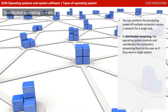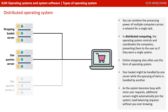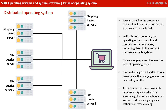Now let's look at distributed operating systems. You're able to combine the processing power of multiple computers across a network for a single task. In distributed computing, the operating system controls and coordinates all the computers, presenting them to the user as if they were a single system. Online shopping sites often use this form of operating system — your basket might be handled by a particular server, while querying the site for items is handled by another. As the system becomes busy and the load increases, additional servers might automatically join the system, balancing the load without you ever realising you're connecting to more than one physical computer.